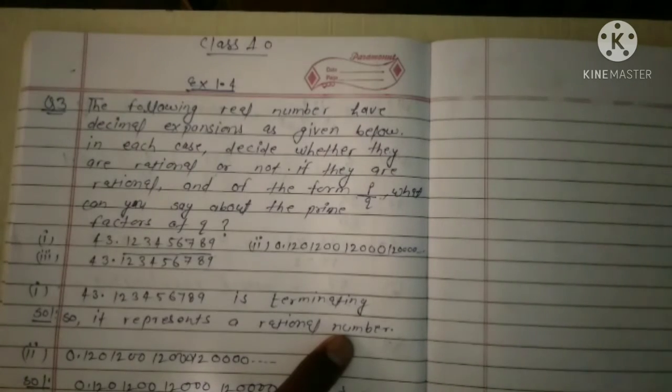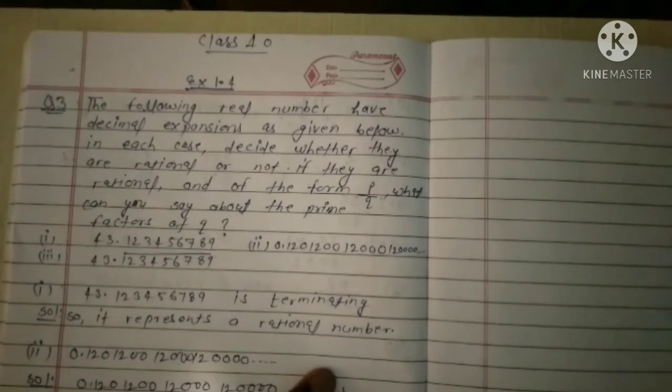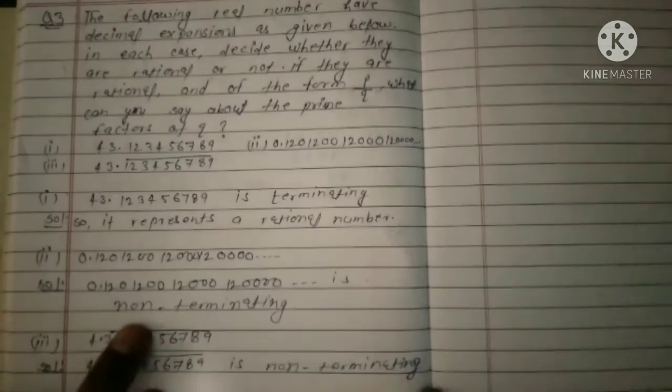Second number: 0.111200120000... Look, this number is going to infinity, so this is non-terminating.